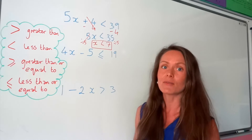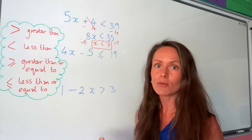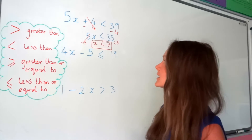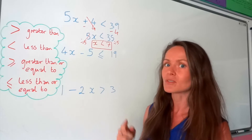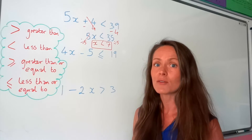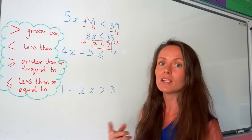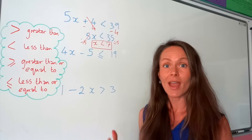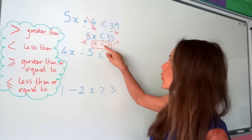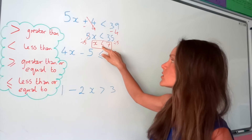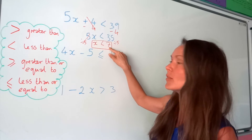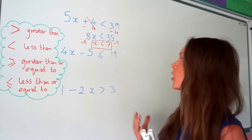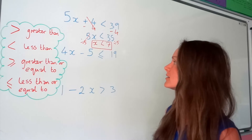Remember, there's no equal sign here, so it's just less than. So x, if it were an integer — a whole number — could be equal to 6, 5, 4, 3, 2, and so on. So x takes a range of values which are all smaller than 7.